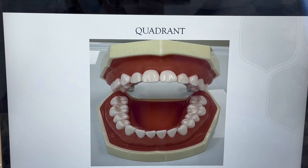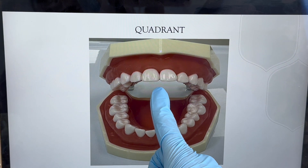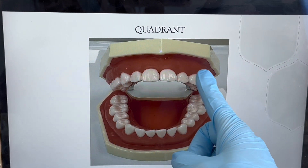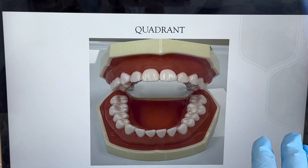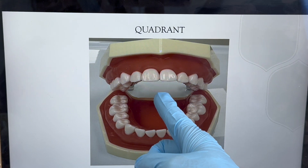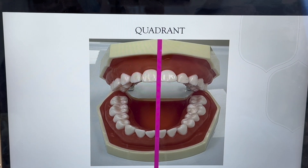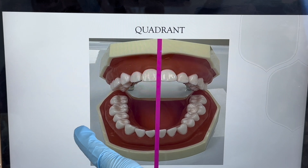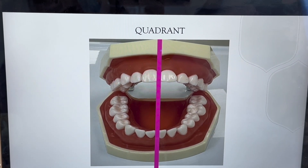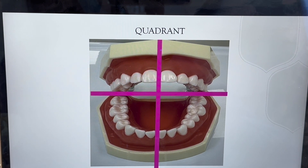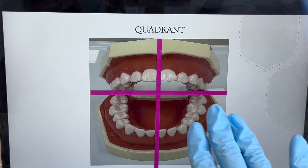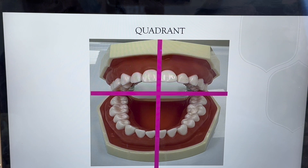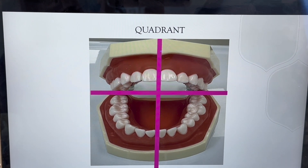Now, the quadrant. We have to identify if the tooth is on this side or on that side. We divide the mouth into four sections. We draw an imaginary line right in the middle to divide this side from that side, and another imaginary line dividing the top and bottom — the maxillary teeth from the mandibular teeth. When naming a tooth, we always keep in mind that it is the patient's side, not our side.